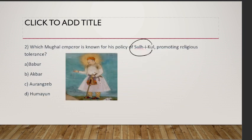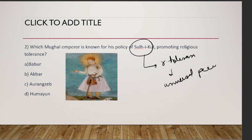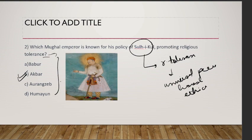Which Mughal emperor is known for his policy of Sulh-i-Kul? The Sulh-i-Kul policy is a religious tolerance policy — it talks about universal peace, honesty, and ethics. So any question related to religious tolerance policy, the answer will be Akbar. He was a religiously tolerant person and brought many religious tolerance policies.